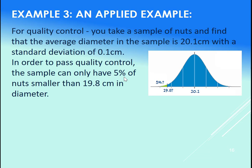Well, when you are doing quality control, you assume that there's going to be a certain acceptable amount of defective product. So in this case, the defective product would be any nuts that are smaller than 19.8 centimeters, and we're putting that percentage of defective product at 5%.